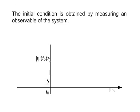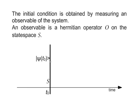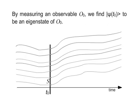The initial condition is obtained by measuring an observable of the system. An observable is a Hermitian operator O on the state space S. By measuring an observable O0, we find Psi to be an eigenstate of O0.